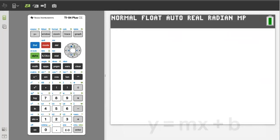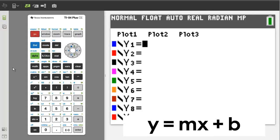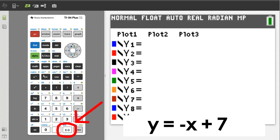First I will enter an equation of a line in the form y equals mx plus b. Press the y equals button. I will enter a line equation of y equals negative x plus 7. Make sure to press the negative sign here and not the minus button. X is this button.